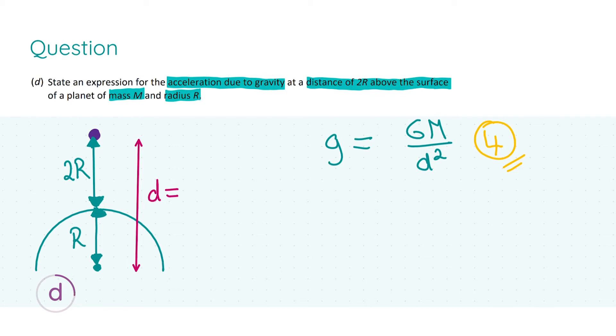Now how to adapt this formula to the question. Look at the diagram I've drawn to the left. We're looking at this purple particle at the top, a distance of two r above the surface. In this formula d is measured from the center of mass of the particle to the center of the planet, concentrated in the center assuming it's round.